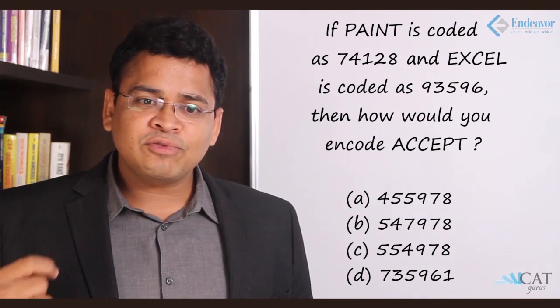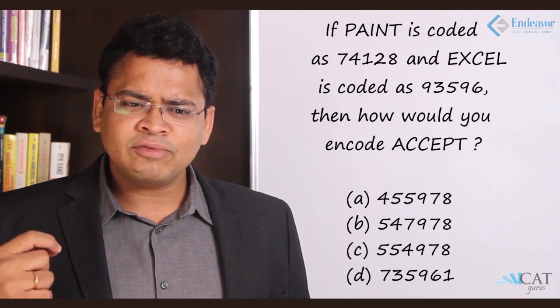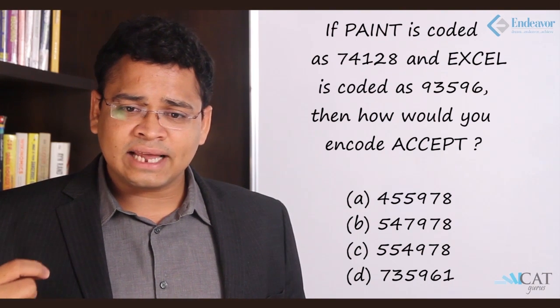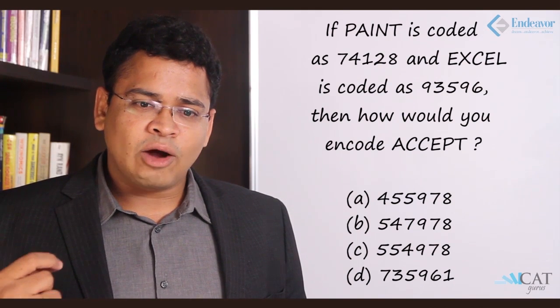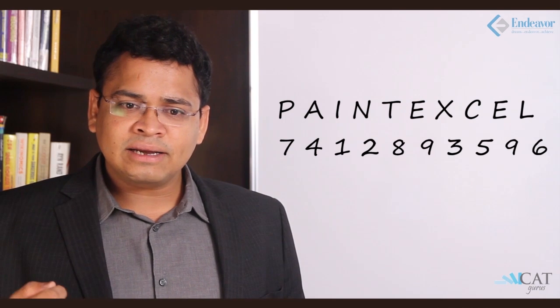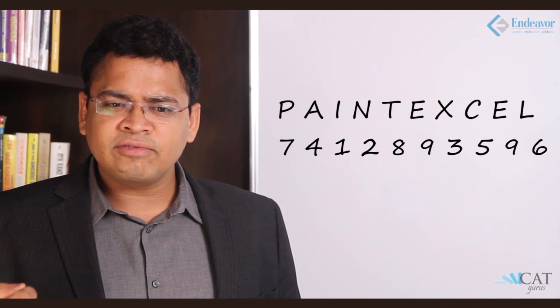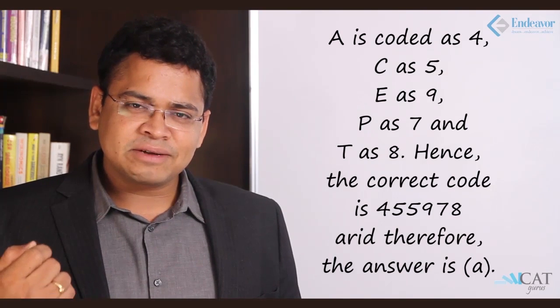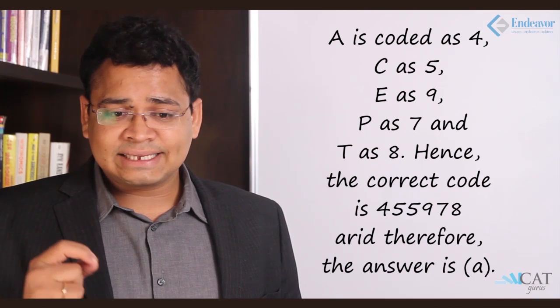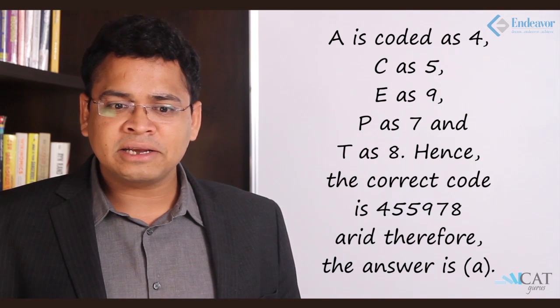Moving to number coding: if PAINT is coded as 74128 and EXCEL is coded as 93596, how is ACCEPT coded? We simply fetch each letter's assigned code from the given words: A is 4, C is 5, E is 9, P is 7, T is 8. So ACCEPT is coded as 455978, which is the first option. This is a straightforward number coding example.